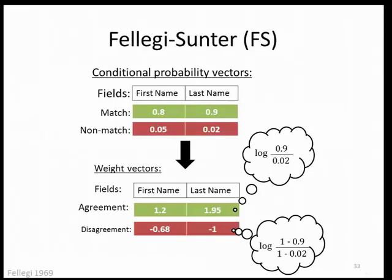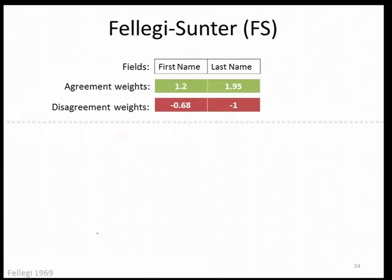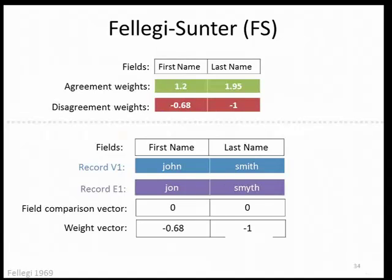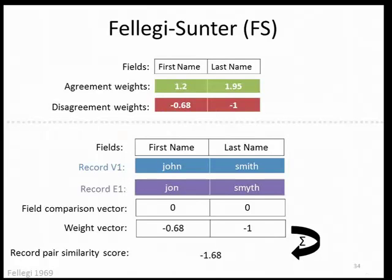These conditional probability and weight vectors are calculated once per record linkage over all record pairs. Now I'll show how these are used in scoring. We have the weights calculated in the previous slides on hand. For a record pair we're scoring, since Fellegi-Sunter works with binary field comparison, neither of these fields agrees completely, so they're given a similarity of zero. The disagreement weight associated with each field is assigned in the weight vector, and these weights are summed over all fields to get a record pair similarity score.